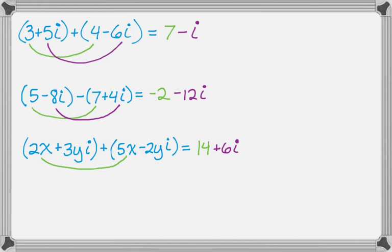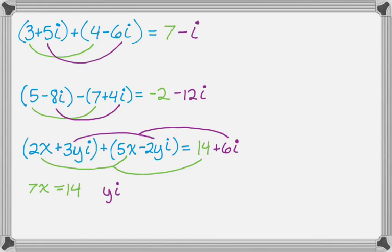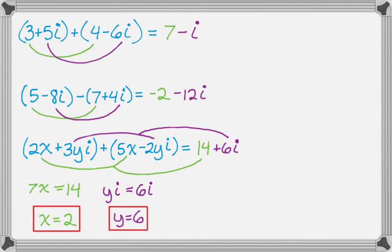Add the real parts — the terms without i: 2X plus 5X is 7X, and that must equal the real part 14, so 7X equals 14, giving X equals 2. Then for the imaginary part: 3Y plus negative 2Y is Y, and Yi must equal 6i, so Y equals 6. Those are the solutions — that's how you add or subtract complex numbers with unknowns.